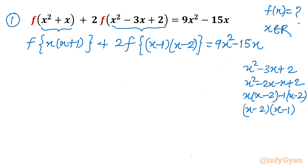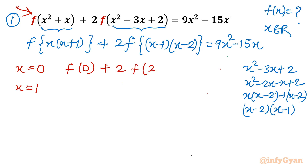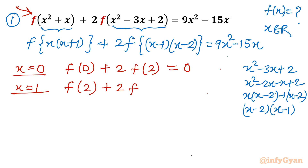Now I will perform some operations, but before that, let's substitute x=0 and x=1 and see what comes out from equation number 1. For x=0: 0²+0 gives f(0+2), so 2f(2), and the right hand side is 0. For x=1: 1²+1 gives f(2) plus twice of f(1-3+2), and 3-3 is 0, equal to 9-15, so minus 6.